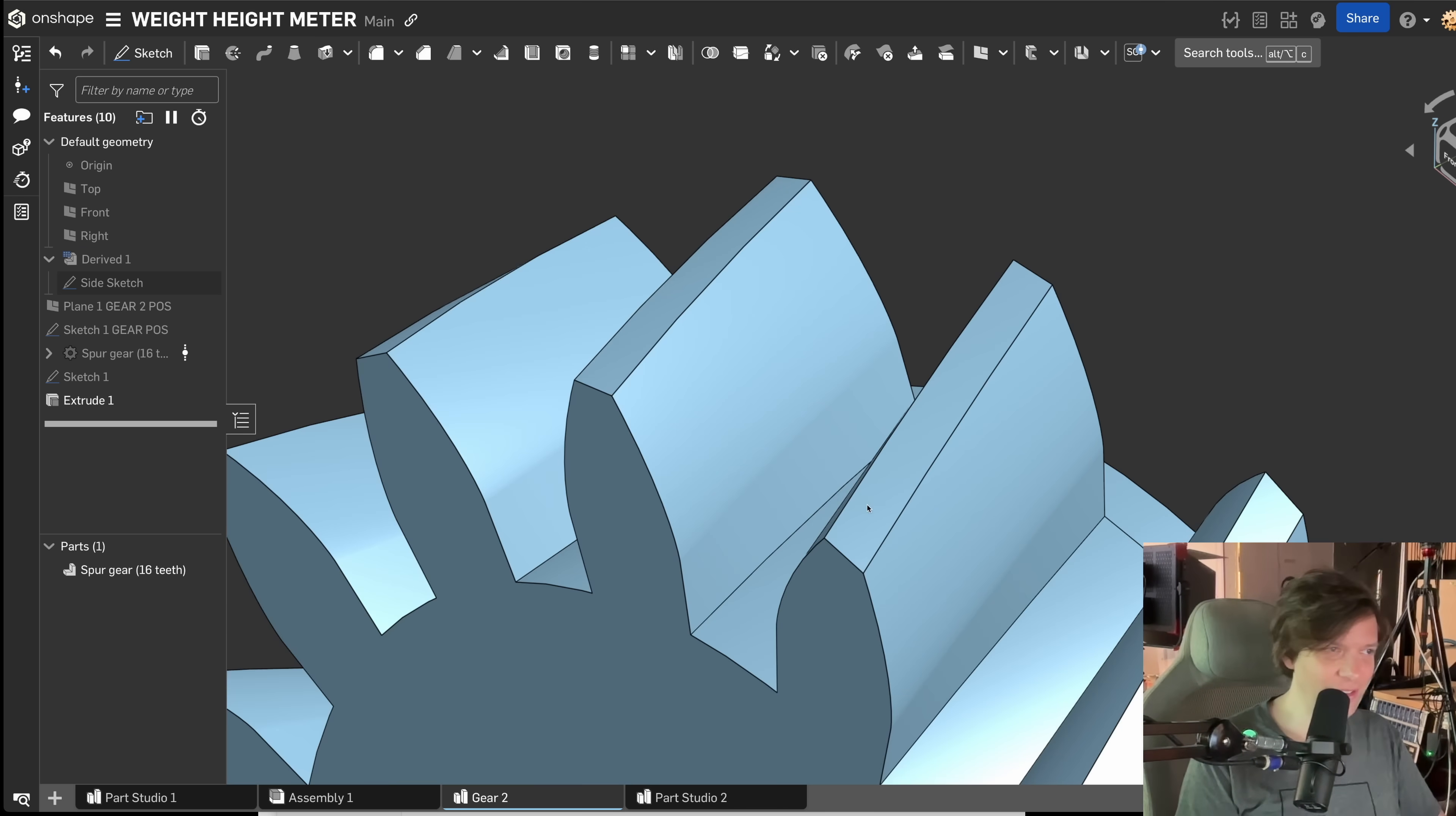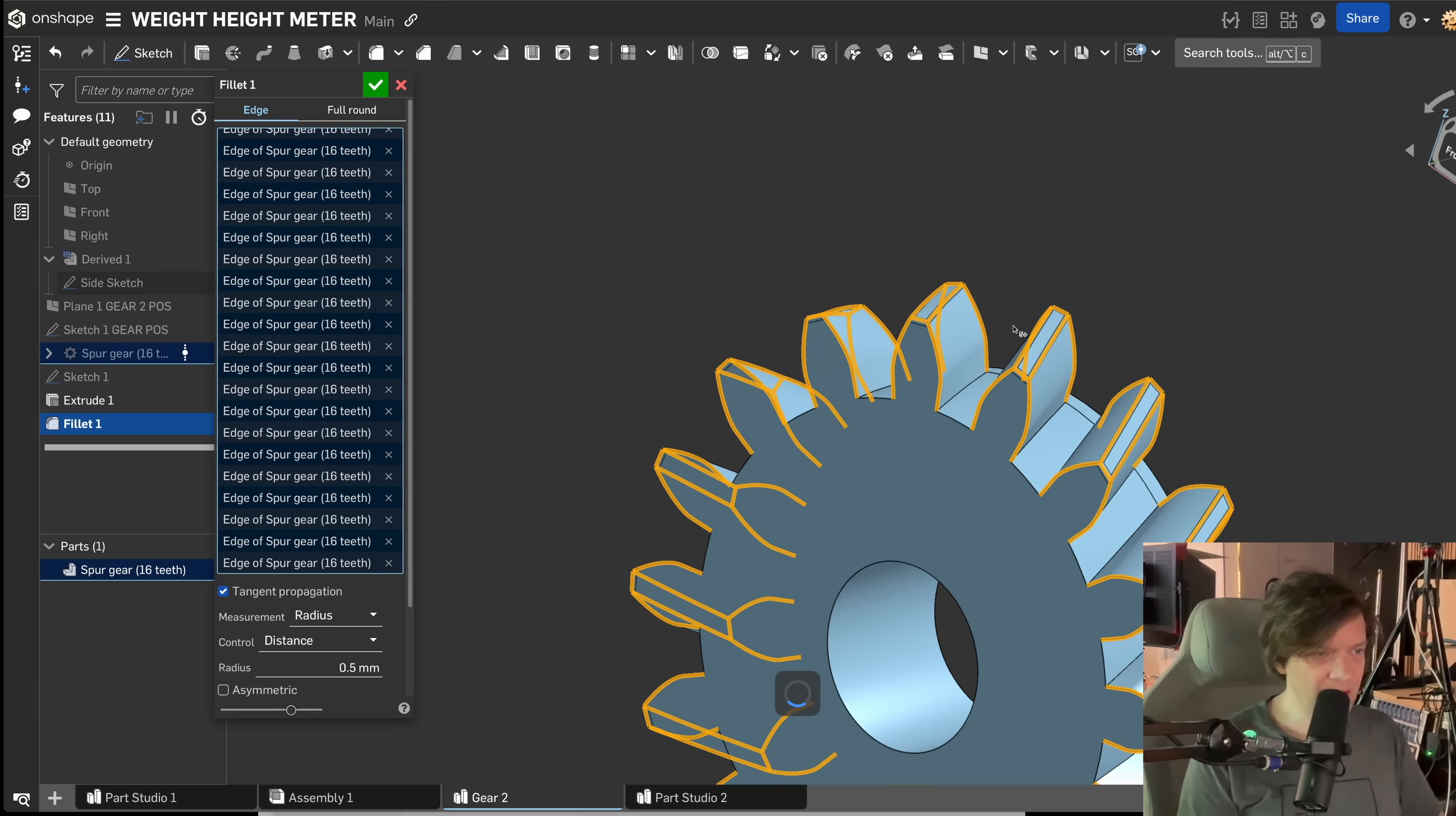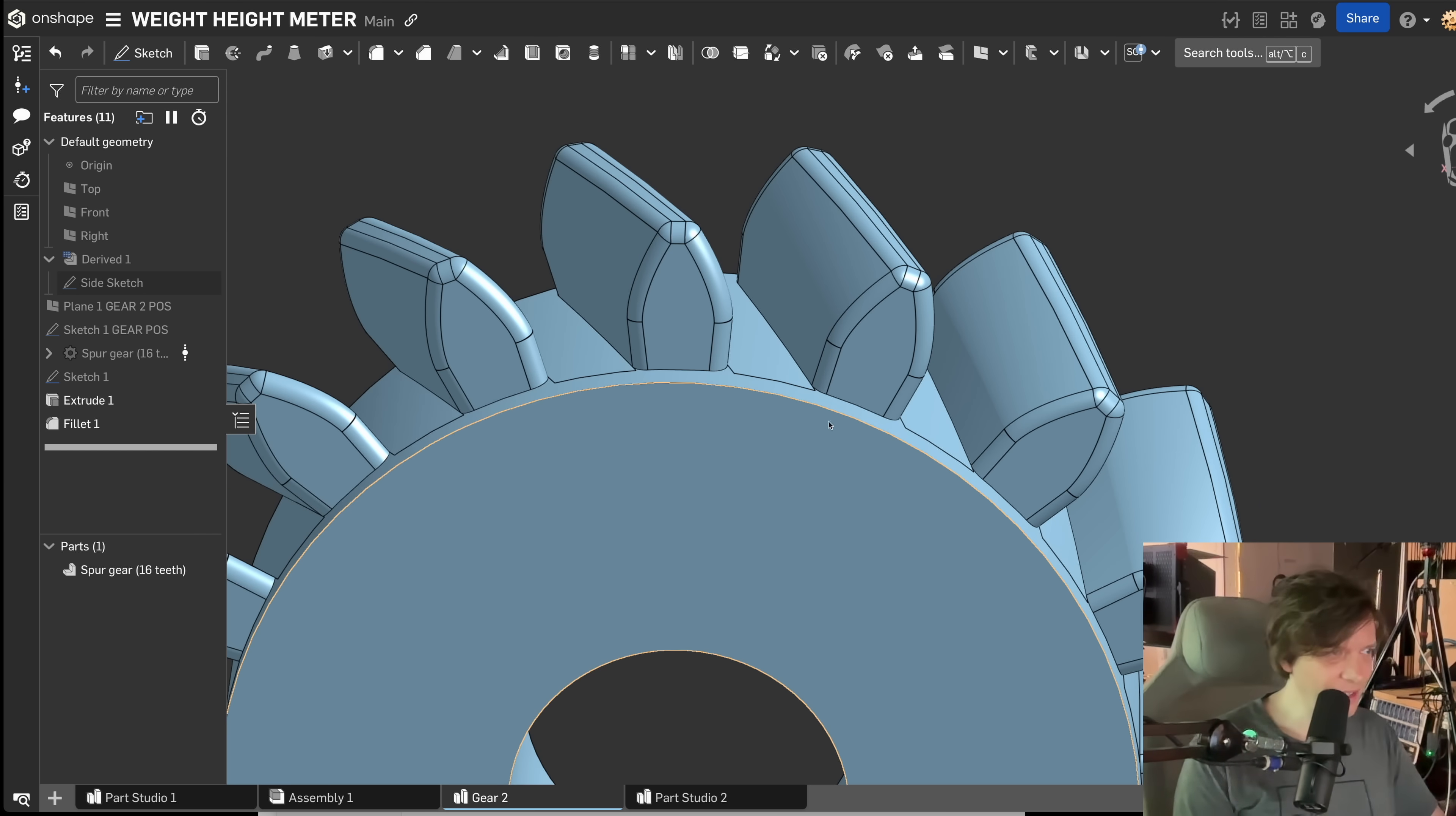I want to fillet all the edges of these teeth because it's 3D print. So shift F for fillet and I'm choosing this edge. Right click, select equal length radius edges. I do the same, select equal length and it does it for all the teeth. And I can even do this one, select equal length radius edges. This compute takes some time, but now you can see that we managed to select all the edges with like three clicks. And boom! All our gear teeth are filleted. Really, really nice.